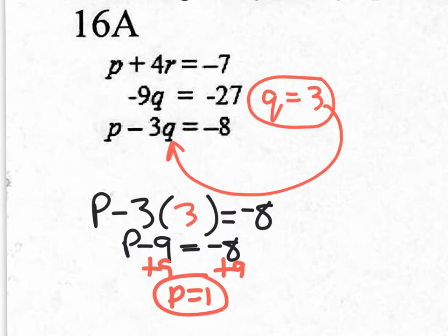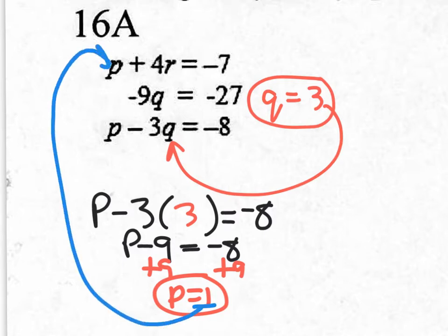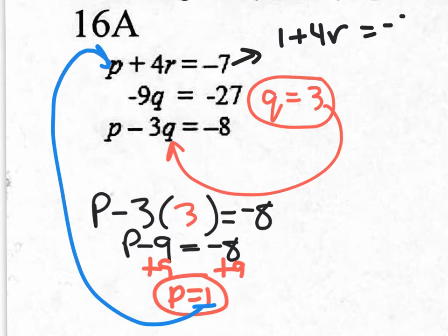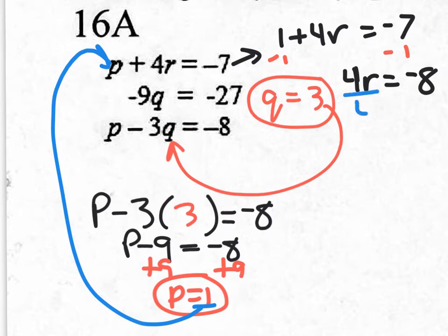I have my P value and my Q value. Now I need to find my R value. R is up in the first equation, so I need to plug in P there. Taking the 1 and plugging it in, it's going to be 1 plus 4R equals negative 7. If you subtract 1 from both sides, you have 4R equals negative 8. Dividing by 4 on both sides gives R equals negative 2.